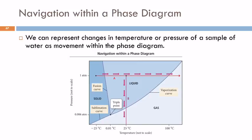We're not going to ask you to draw phase diagrams, but you should be able to navigate within one. We can represent changes in temperature or pressure as movement within the diagram. On line A, we're keeping one atmosphere of pressure and increasing temperature.